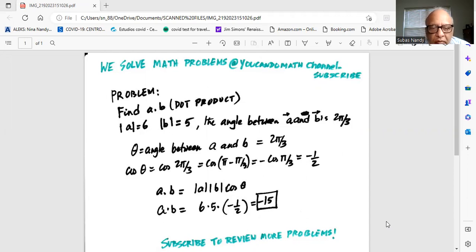So a dot b equals magnitude of a times magnitude of b times cosine theta, which is 6 times 5 times minus 1/2, equal to minus 15.